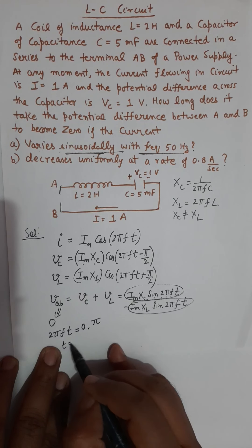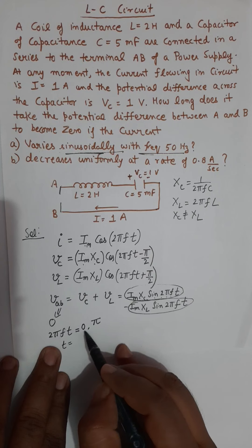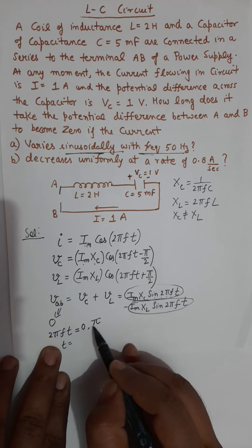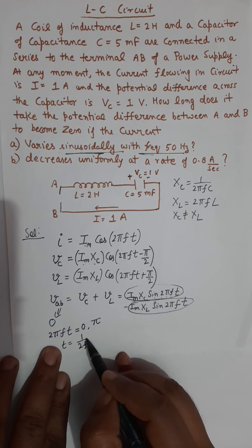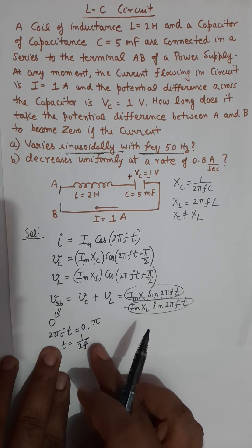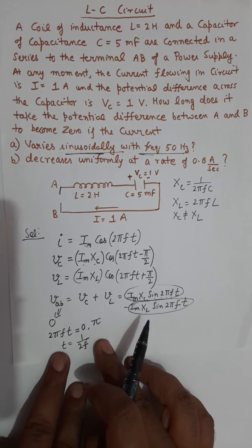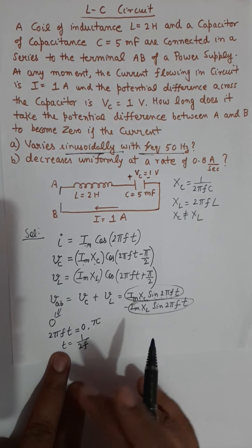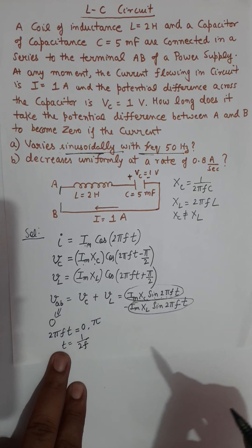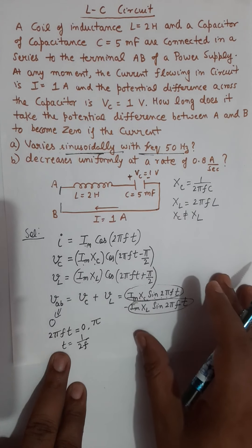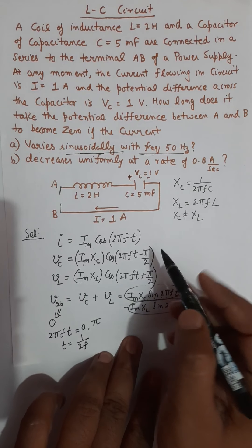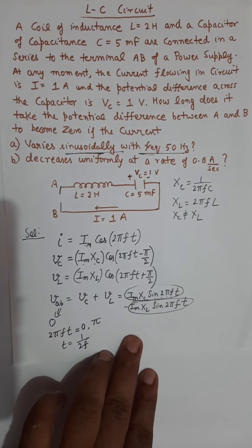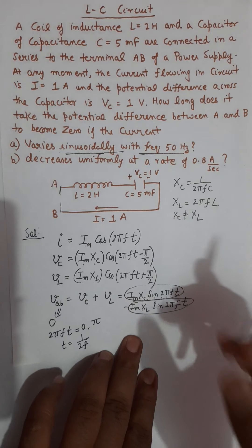t equals 0 is not possible because that defines the initial moment. So the value of t will be 1 over 2f. But this is the value of t starting from the moment when t was 0. Now you want to find these values on a graph — let me show it on the graph.